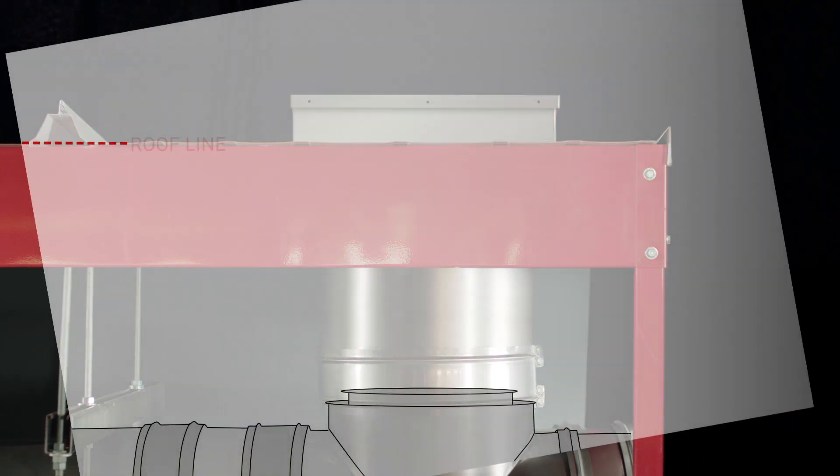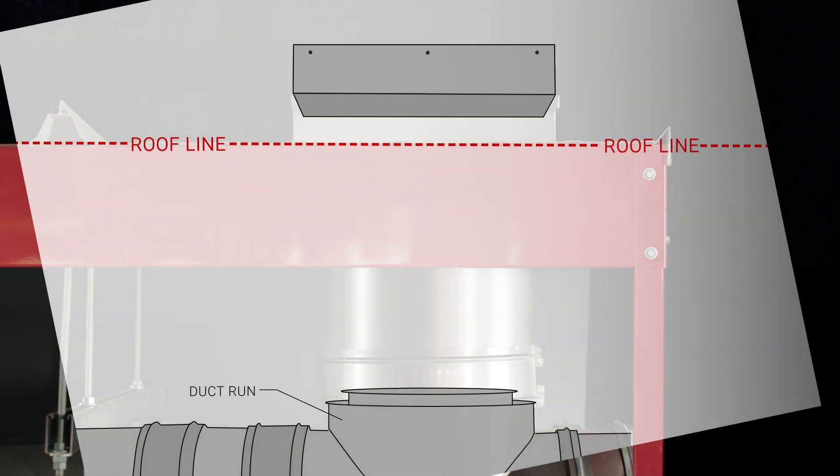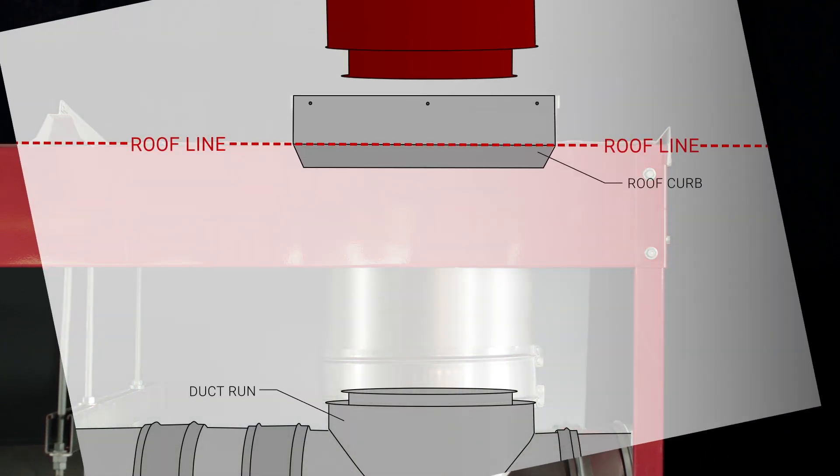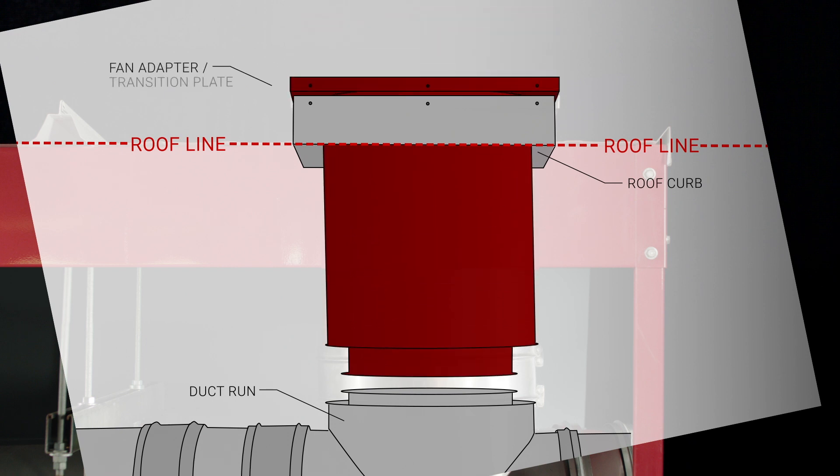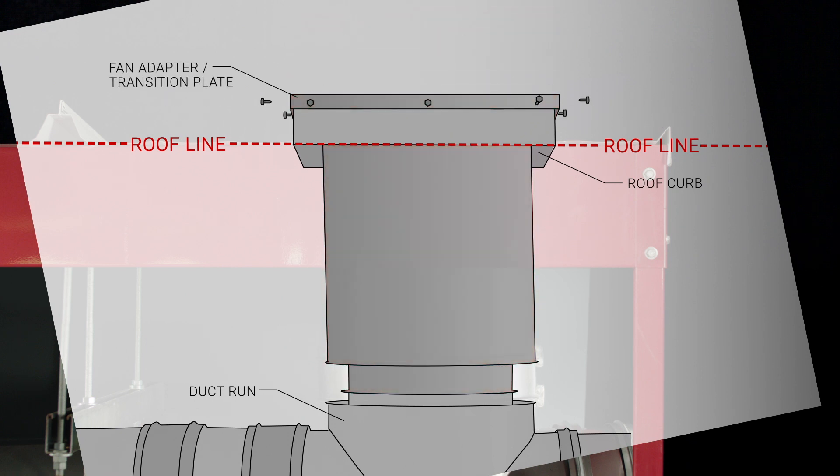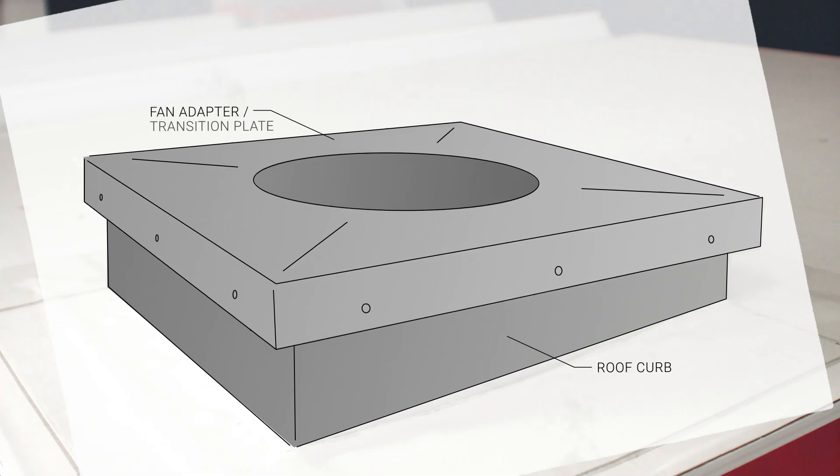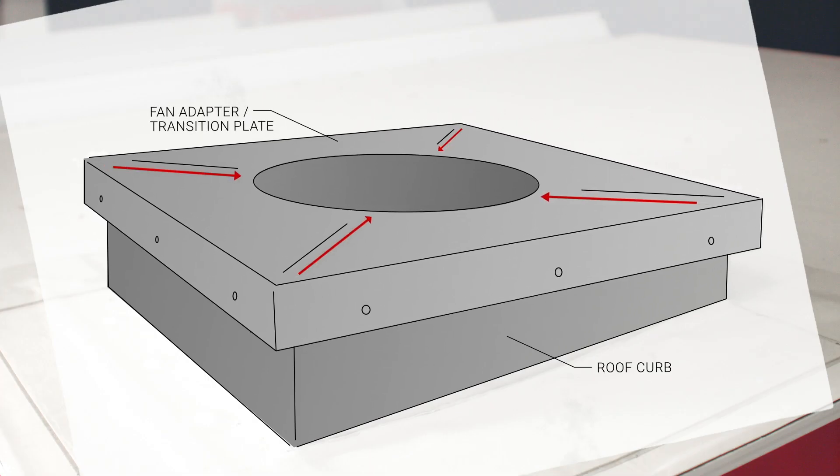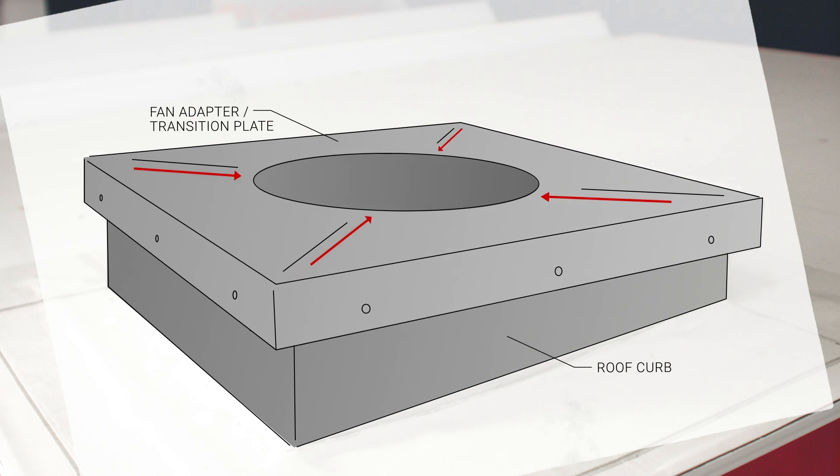The fan adapter plate or transition plate is designed to connect to a previously installed roof curb. When connected, the plate mounts on top of the fan curb, which supports the fan housing. The adapter plate is formed to provide a slope allowing grease deposits to flow back into the duct.